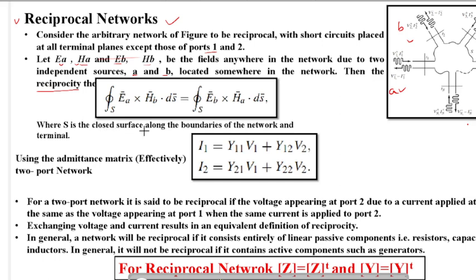The reciprocity condition is: the integration of E cross H dot ds equals the closed loop integration of Eb into Ha ds. Where S is the closed surface — if a microwave signal is ongoing and we close the surface, this gives us the total power. If the power is the same in both ways, we can say the network is reciprocal.